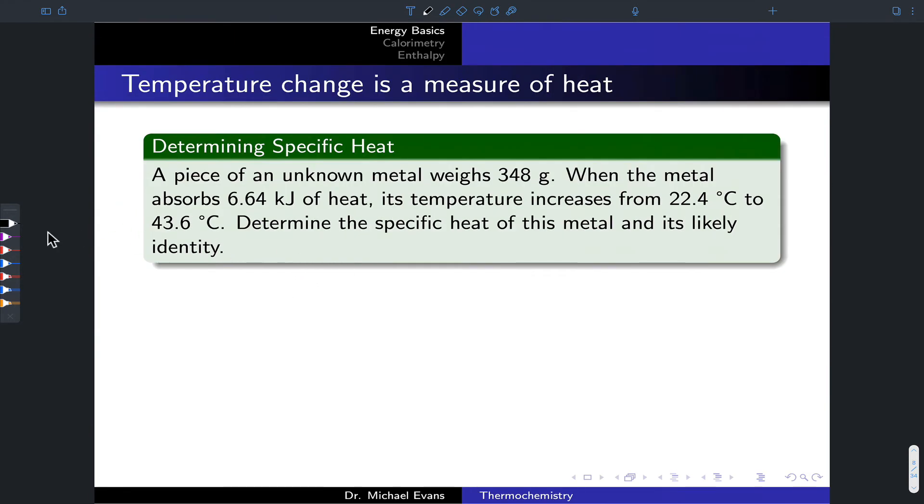Here's another example problem that corresponds to a permutation, but still uses the same fundamental idea of specific heat and heat capacity as the connection between heat and temperature change. We've got a piece of unknown metal. We have its mass, 348 grams. That metal absorbs a known quantity of heat, 6.64 kilojoules.